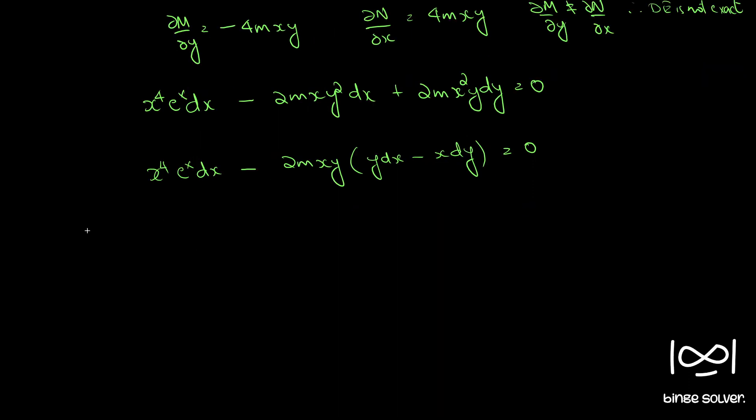If you divide by x raised to 4 throughout, we will have e raised to x dx minus 2m y over x into (y dx minus x dy) over x squared equal to 0.